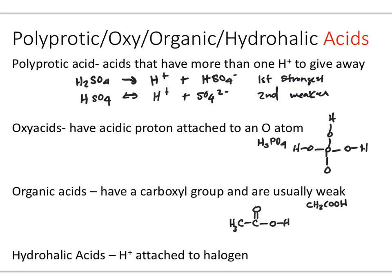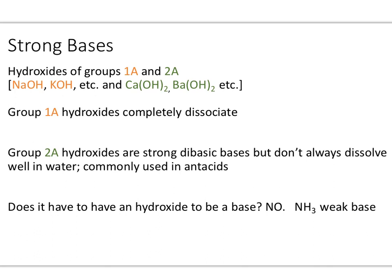The last examples are the hydrohalic acids — HF, HBr — where you have a hydrogen attached to a halogen atom. Now let's talk about some identifiers for strong bases. Hydroxides of any of the Group 1A or 2A metals are going to behave as strong bases. When put in solution and they dissolve, they will ionize completely. Group 1A hydroxides completely dissociate and are very soluble in water — as soon as you drop them in water, you know your concentration of hydroxide ions.